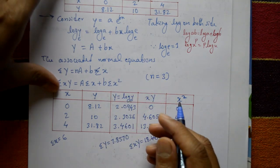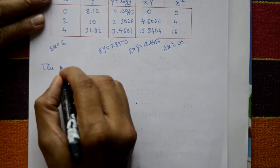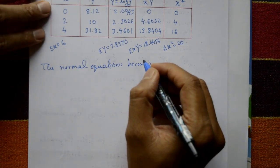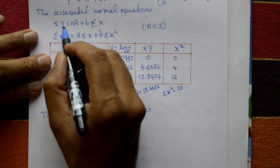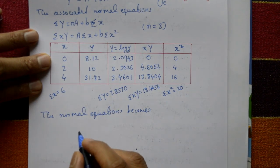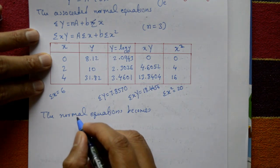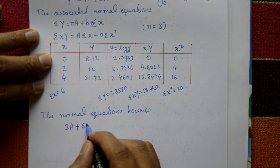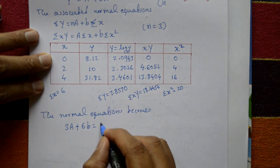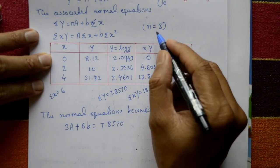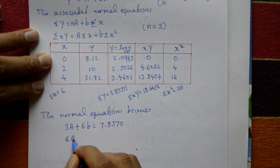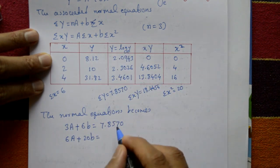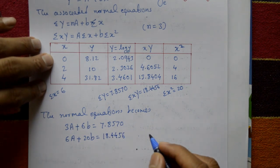Substituting into the normal equations: first equation: 3A + 6b = 7.8570. Second equation: 6A + 20b = 18.4456.